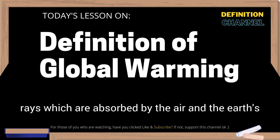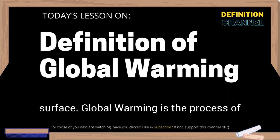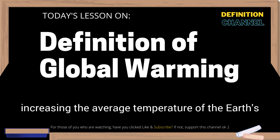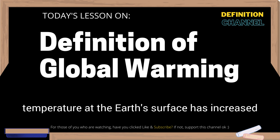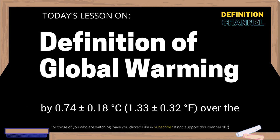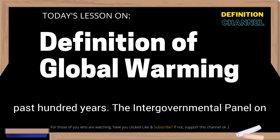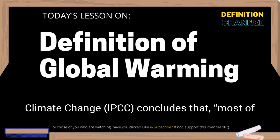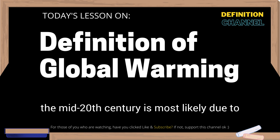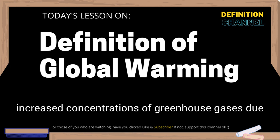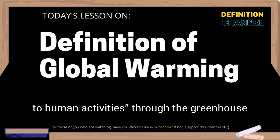Global warming is the process of increasing the average temperature of the Earth's atmosphere, sea and land. The global average temperature at the Earth's surface has increased by 0.74 ± 0.18 degrees centigrade, or 1.33 ± 0.32 degrees Fahrenheit, over the past hundred years. The Intergovernmental Panel on Climate Change, IPCC, concludes that most of the increase in global average temperature since the mid-20th century is most likely due to increased concentrations of greenhouse gases due to human activities through the greenhouse effect.